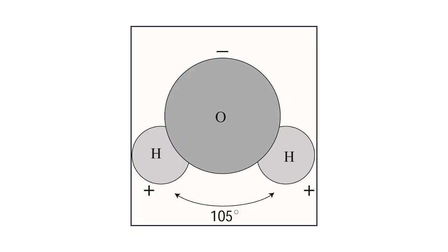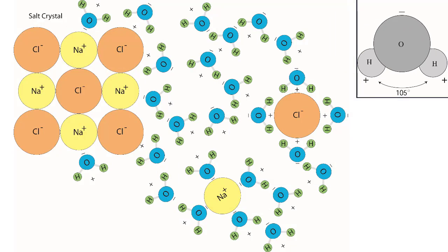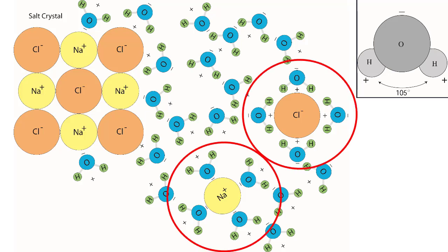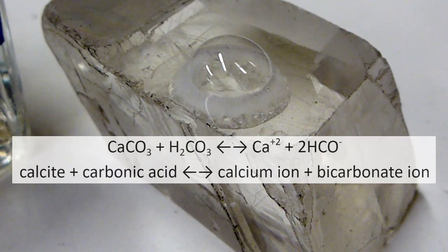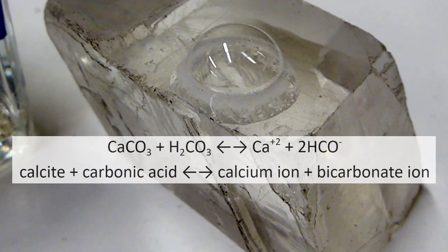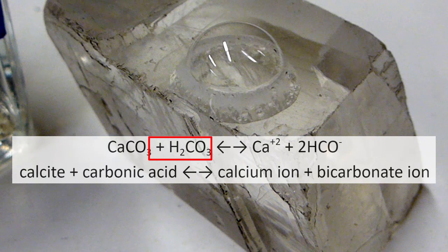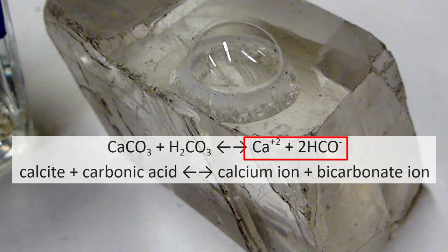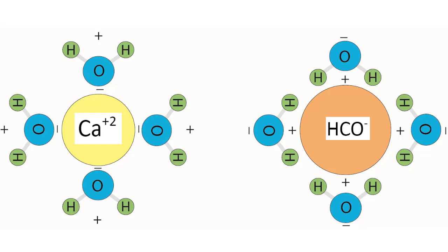Water molecules are polar and have slightly positive and slightly negative sides or poles that allow them to stick to ions. An ion dissolved in water is actually surrounded by water molecules stuck to it on all sides, creating a hydration sphere. These hydration spheres keep the ions separated from each other. The chemical reaction for the dissolution of calcite: calcite plus carbonic acid breaks down into calcium ion plus bicarbonate ion. As long as there is enough water to surround these ions by hydration spheres, the ions will not get back together to form calcite.